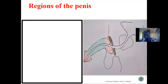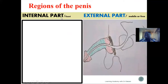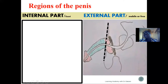The regions of the penis: the penis is divided into different regions, but we first broadly divide it into two sub-regions. We have the internal part, also referred to as the fixed part, and the external part, also referred to as the mobile or free part. The external part is what we see on the outside, while the internal part is embedded within the inner space, deep to a demarcation that separates the two regions.